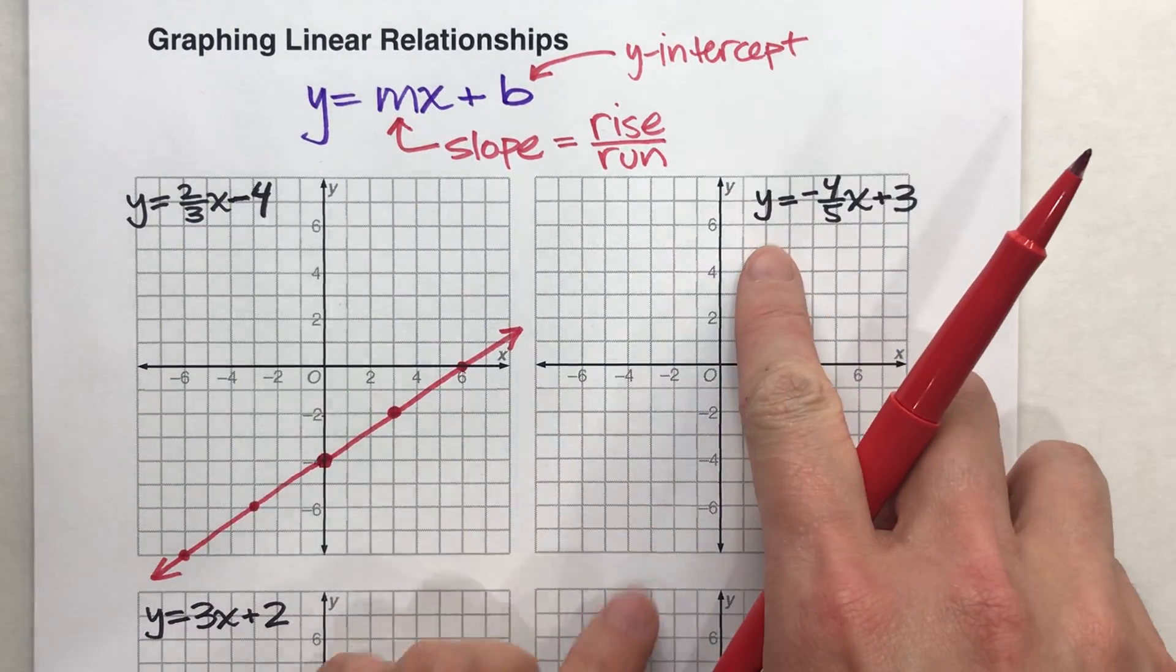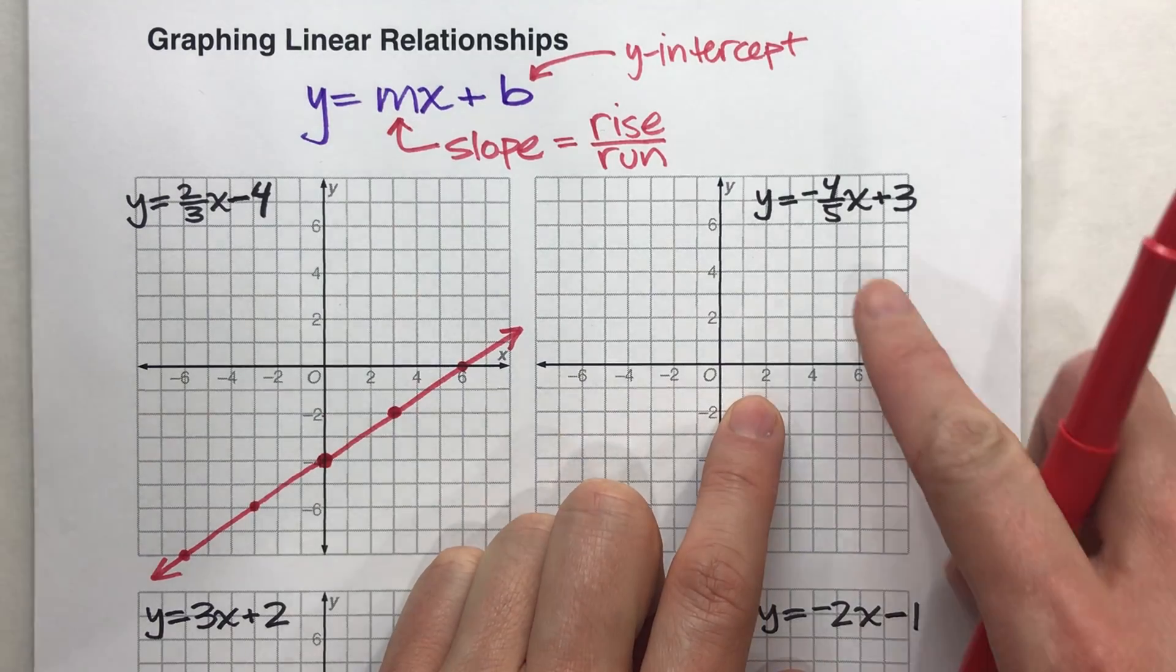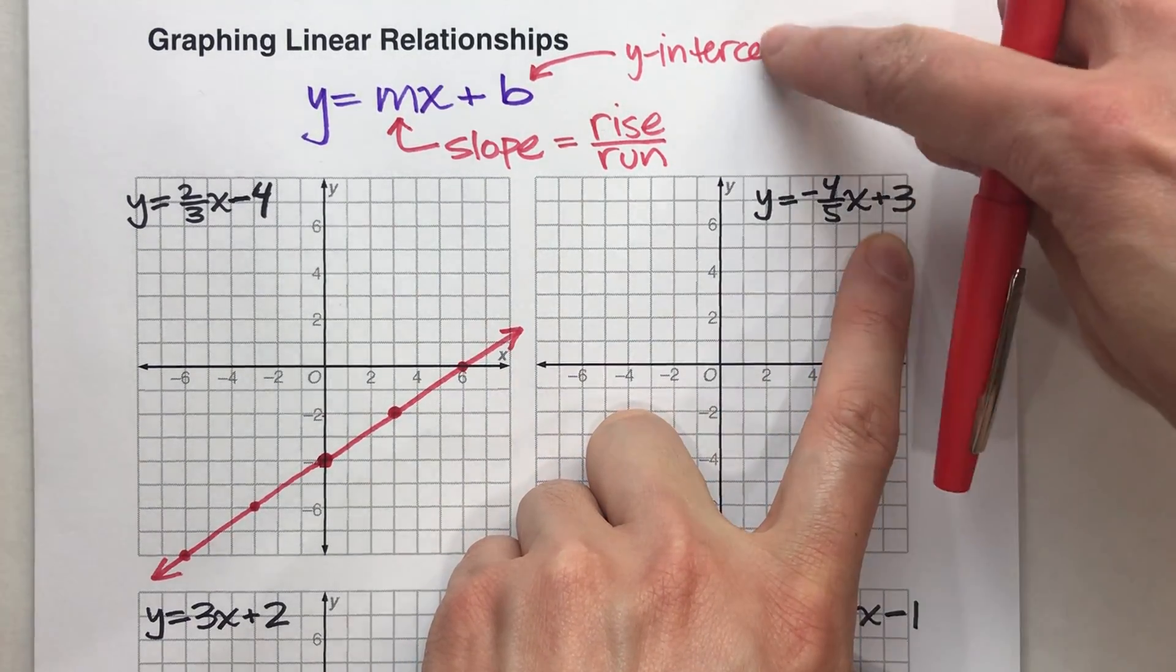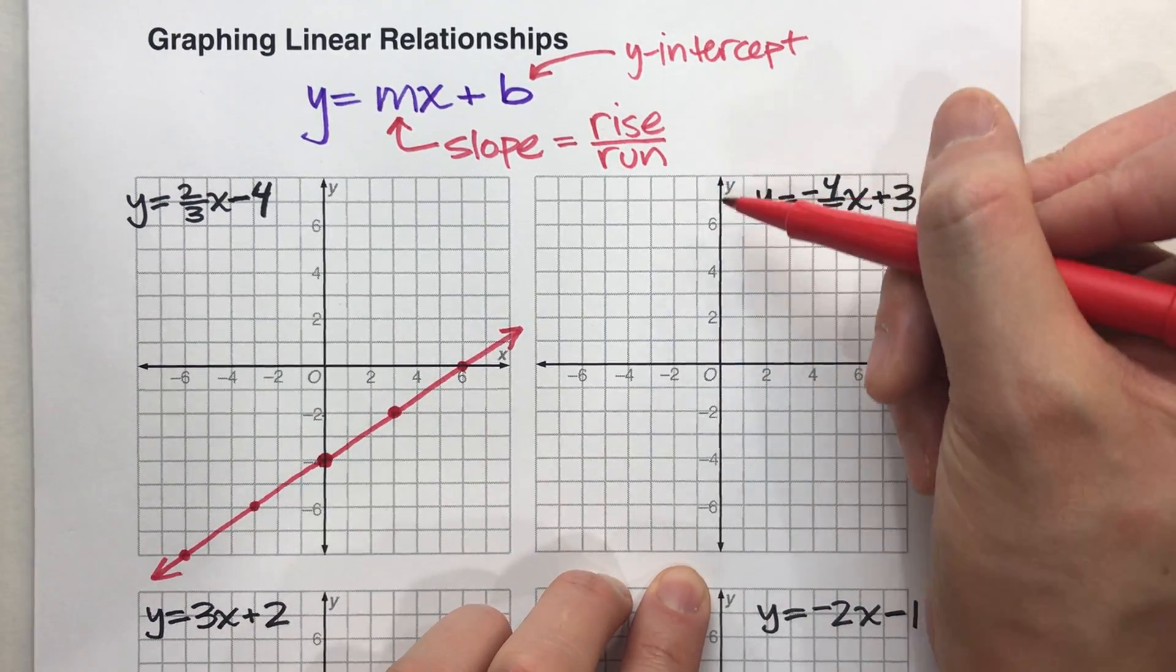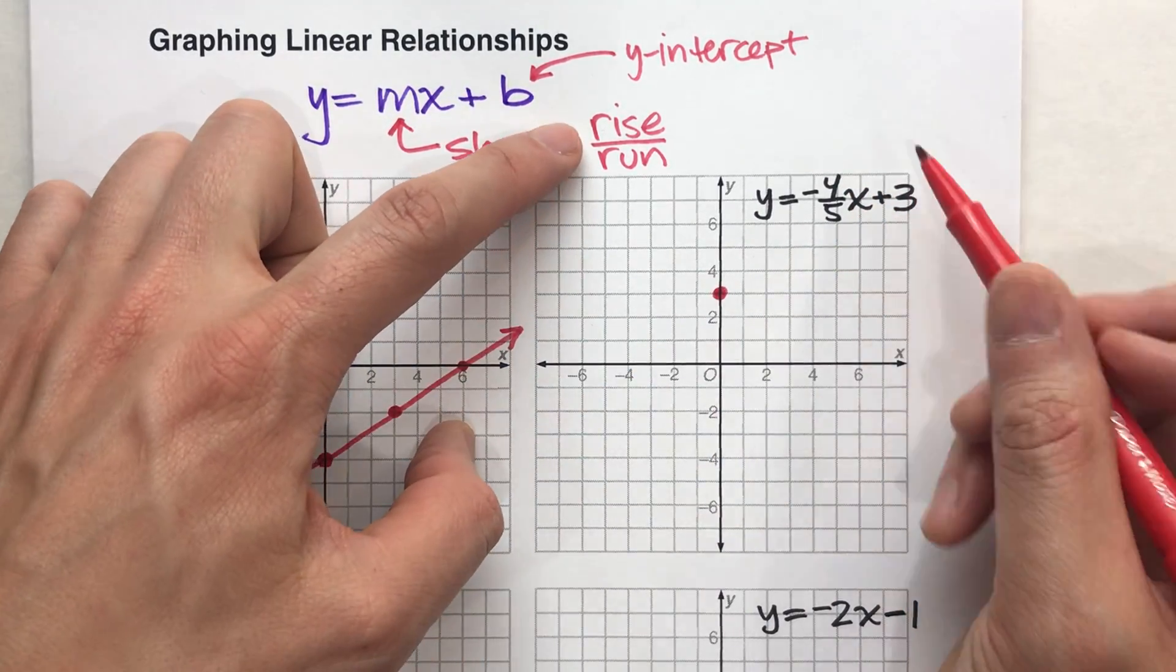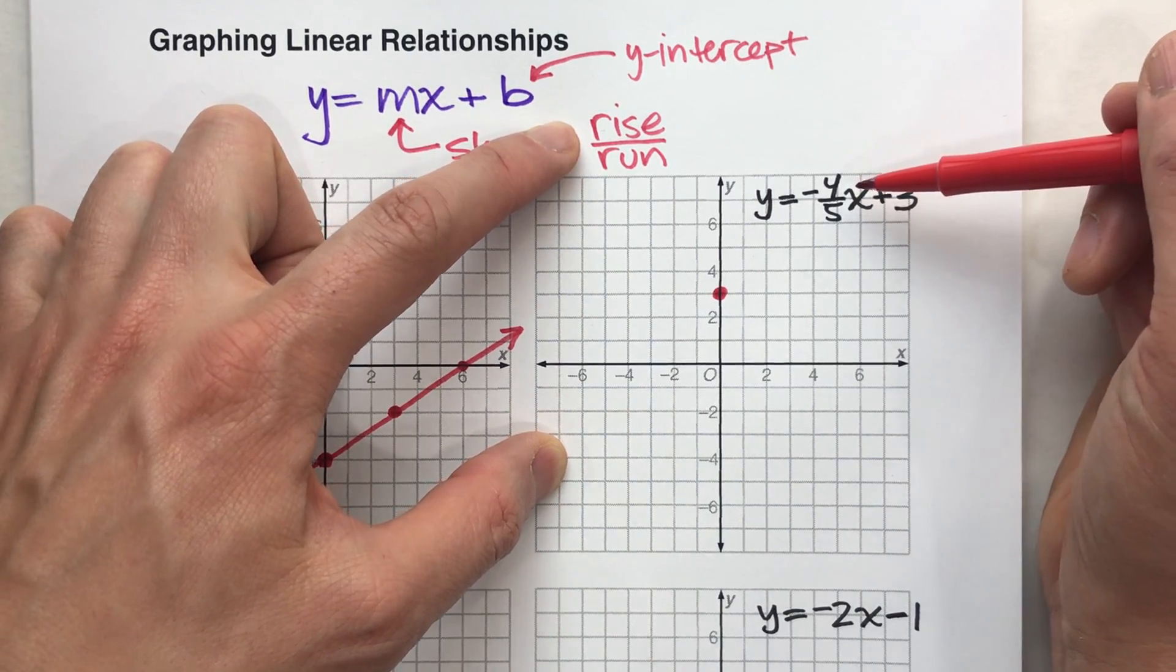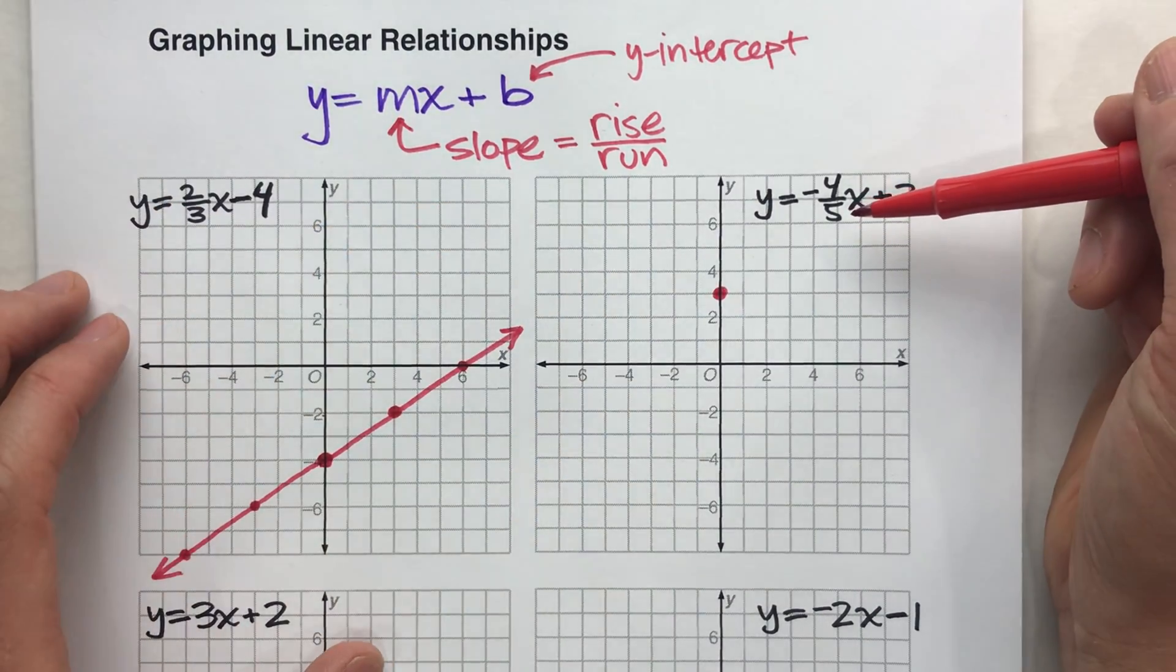Okay, let's do another example. Y equals negative four-fifths x plus three. Again, that number added on the end is my y-intercept. So plus three, that tells us our line is going to cross the y-axis at positive three. And my slope is negative four-fifths. So what that tells me is my rise is negative four. So it's going to go down four. And my run is five. That means go to the right five between every pair of points.